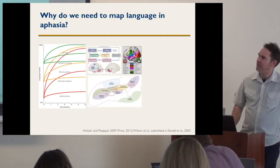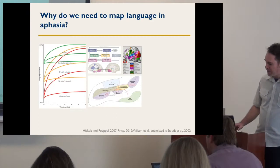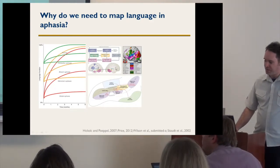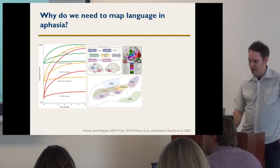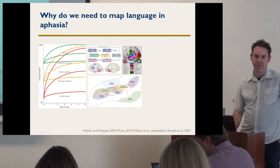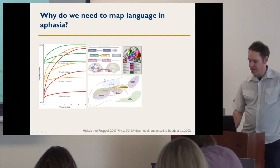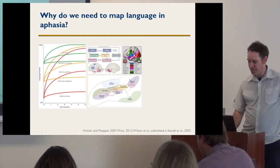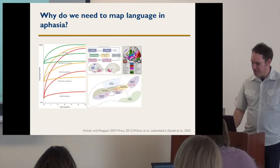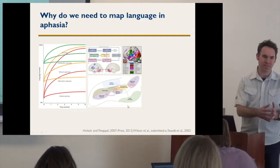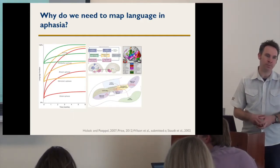We have a pretty good sense of what the language network looks like in a healthy brain. I have up here the famous Hickok and Popper model, and I look forward to seeing Greg's updates on that next week. There's also this amazing paper by Kathy Price from 2012, where she constellates the language network into many more components, and our own contribution to this kind of modeling. So we have ideas of what the normal brain organization for language looks like. The question is: what happens when one or more nodes of that network are damaged?